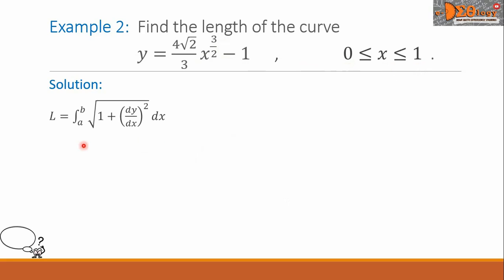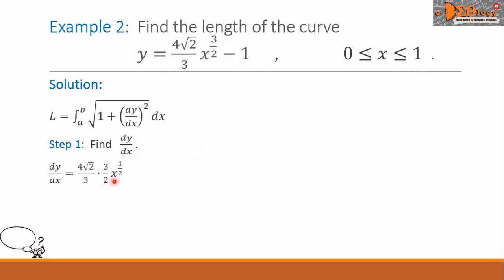Let us write the formula of the length. Step 1: let us find dy/dx. The derivative of the curve is 4 square root of 2 over 3, that is the constant, multiplied by 3 over 2, then times x raised to 1 half. We cancel the 3's and the 2 with the 4. Simplifying further, we have 2 square root of 2 times x raised to 1 half.